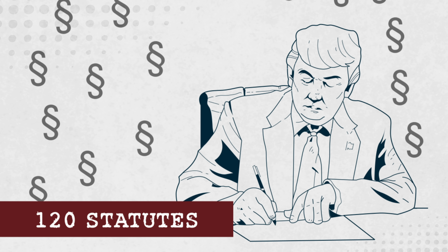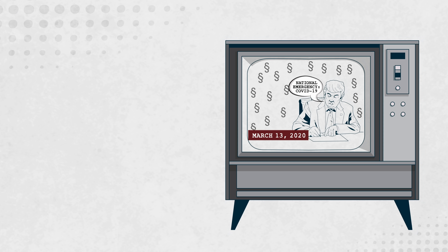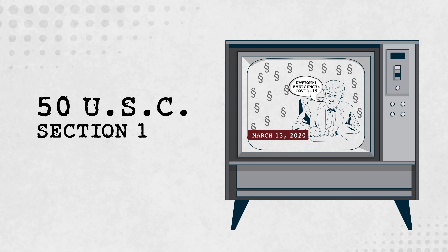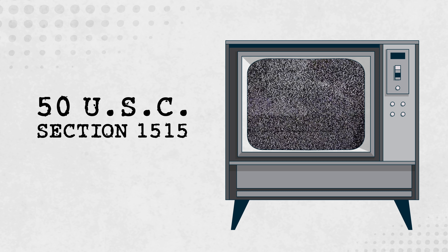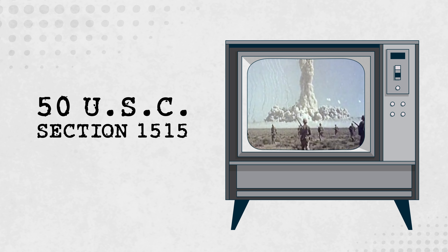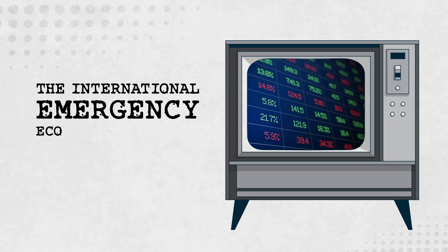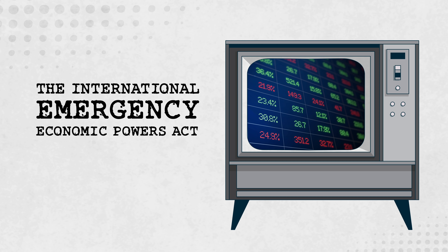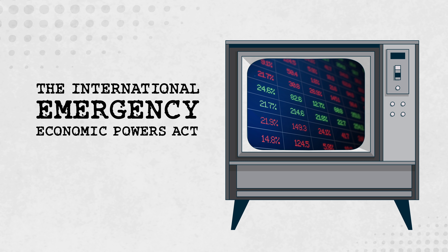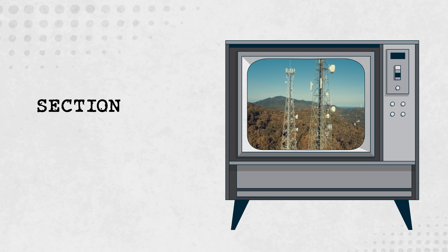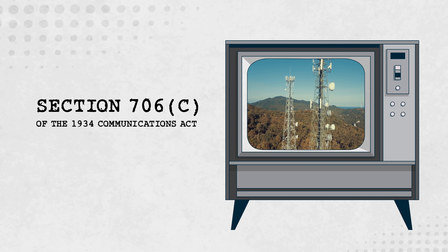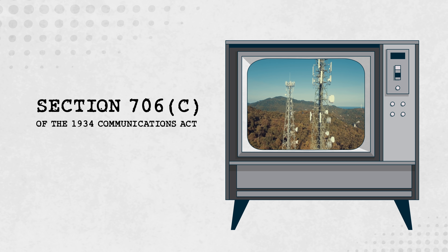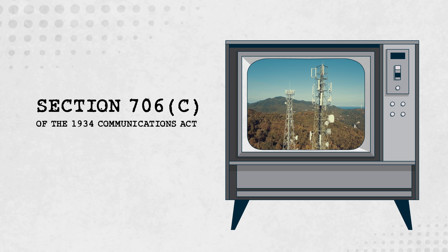There are more than 120 statutes that grant the president emergency authority upon the president's declaration of emergency. For example, under 50 U.S.C. section 1515, the president has power during any national emergency to suspend limitations on testing biological or chemical weapons on people. The International Emergency Economic Powers Act gives the president expansive power to regulate or prohibit a wide range of financial transactions if any foreign national has an interest in those transactions. Section 706C of the 1934 Communications Act empowers the president to shut down or commandeer any radio station during a national emergency.